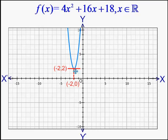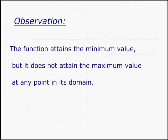Now, how about the maximum value of the function? Here f(x) can be made as large as possible, so it does not attain a maximum value. Hence there is no maximum value for this function. The function attains the minimum value but does not attain a maximum value at any point in its domain.